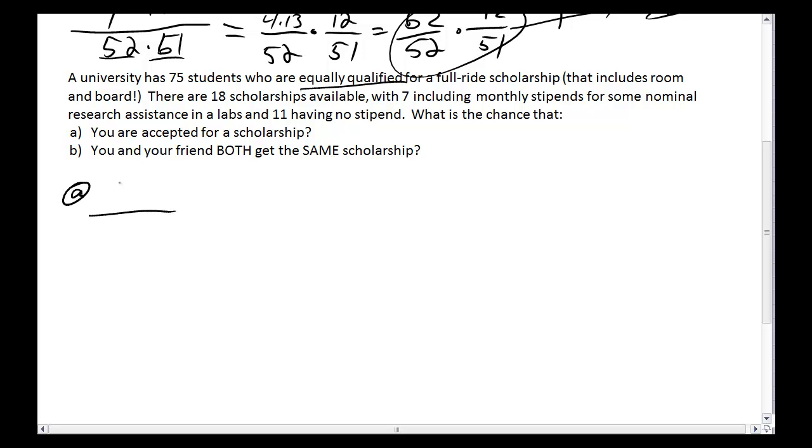Part A is easy. What's the chance that you get picked? Well, the desired outcome is a scholarship. How many total possible people are there to pick? 75. Done.